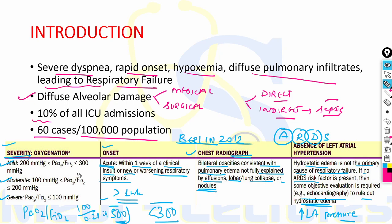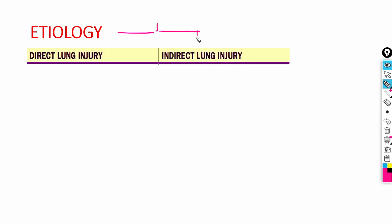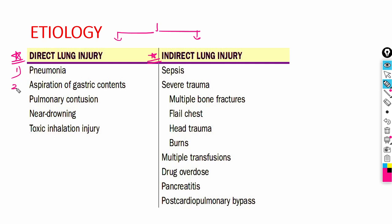Many medical and surgical illnesses are associated with ARDS, but most cases are caused by a relatively small number of conditions. Direct lung injury includes pneumonia, aspiration of gastric contents, pulmonary contusions, near drowning, and toxic inhalation injury. Indirect lung injury includes sepsis, severe trauma such as multiple bone fractures, flail chest, head trauma, burns, multiple transfusions, drug overdose, pancreatitis, and post-cardiopulmonary bypass surgery.